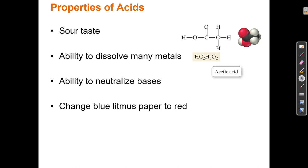Acids change blue litmus paper to red, and what designates an acid is that when we look at a chemical formula, an acid usually has an H on the front. It doesn't always, but I'd say 95% of the time, if a compound is an acid it will have an H listed at the front of that compound.